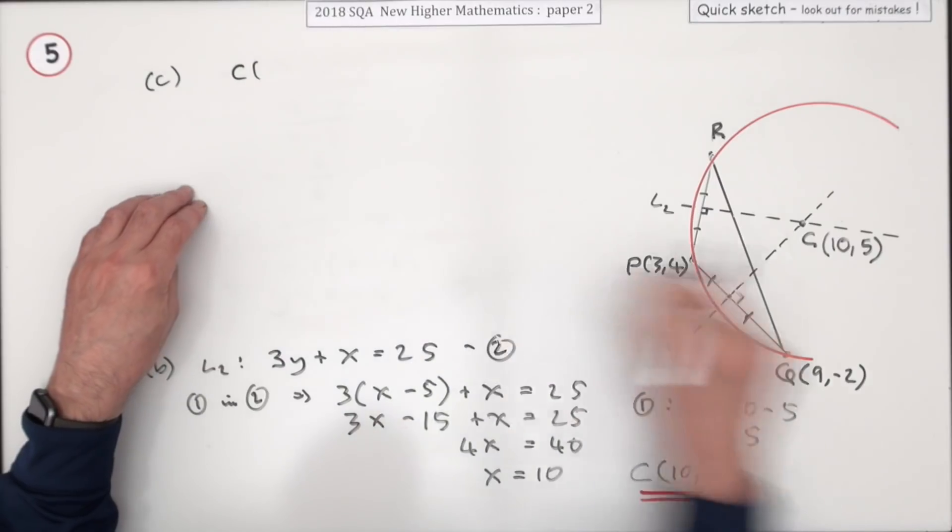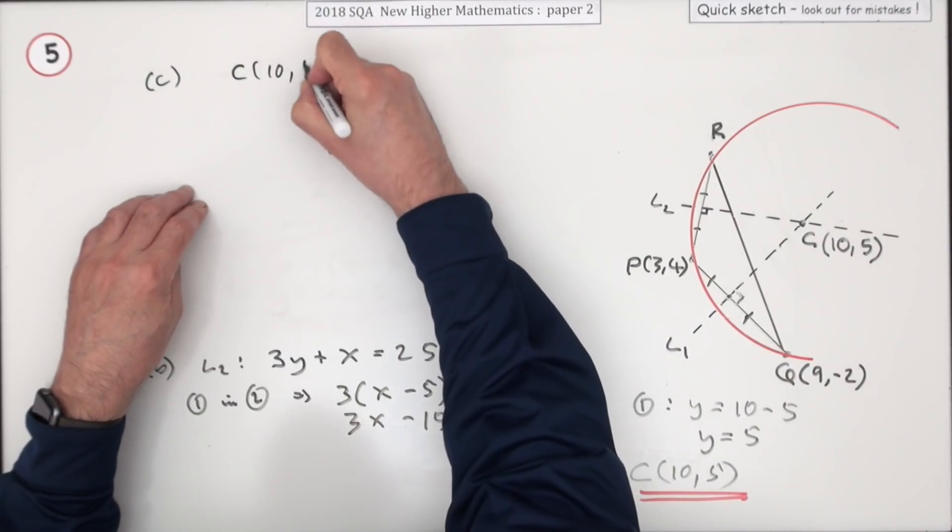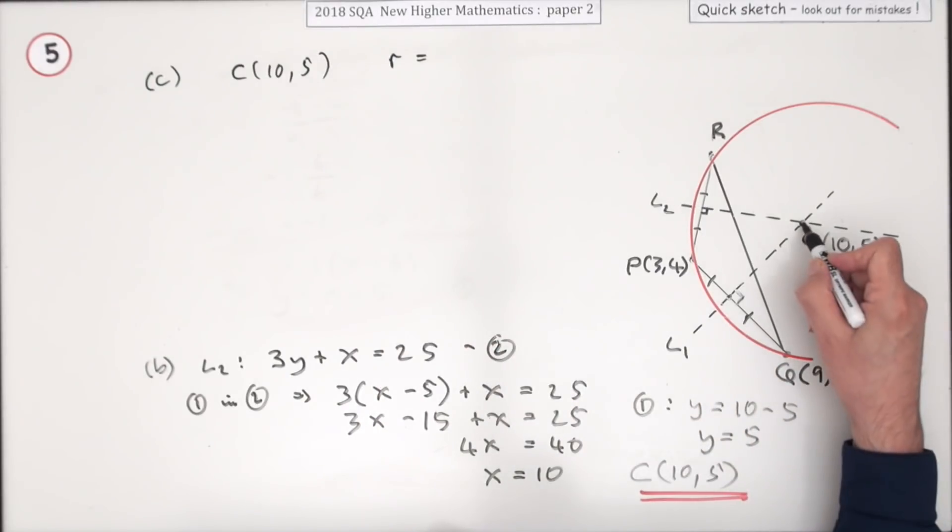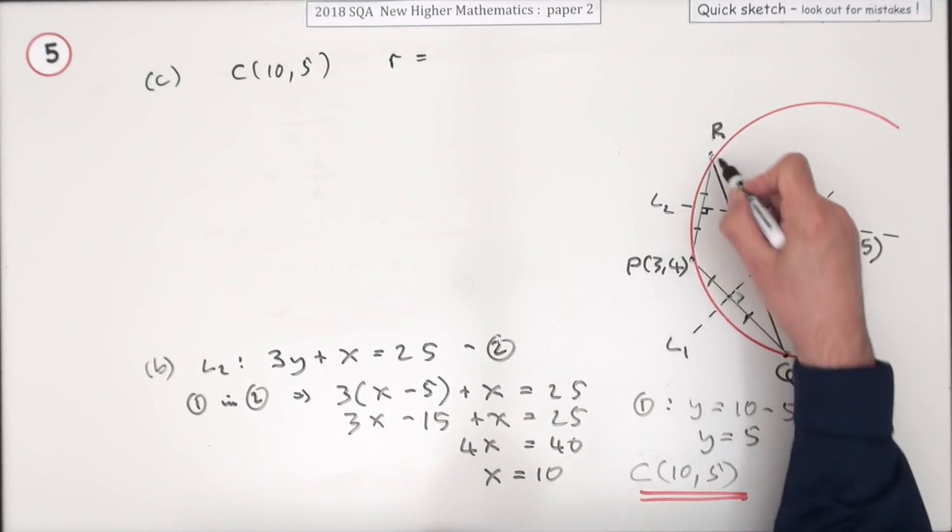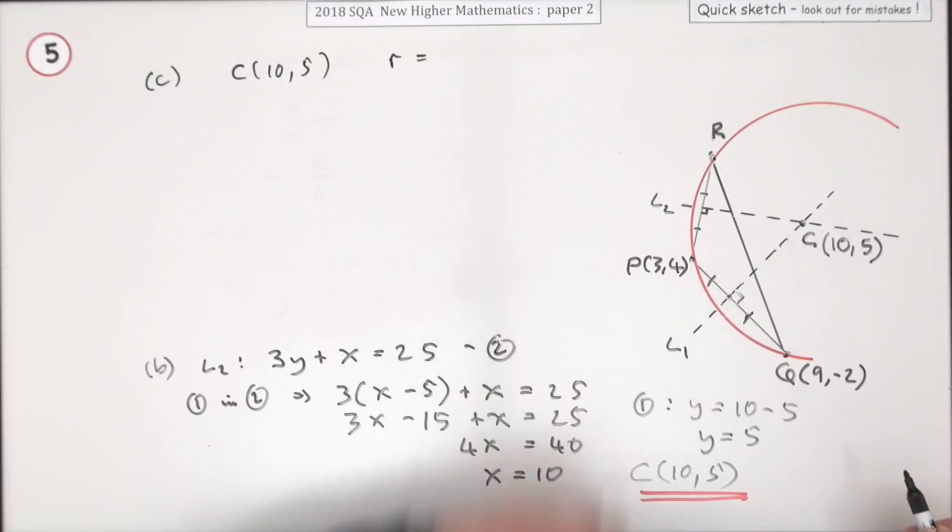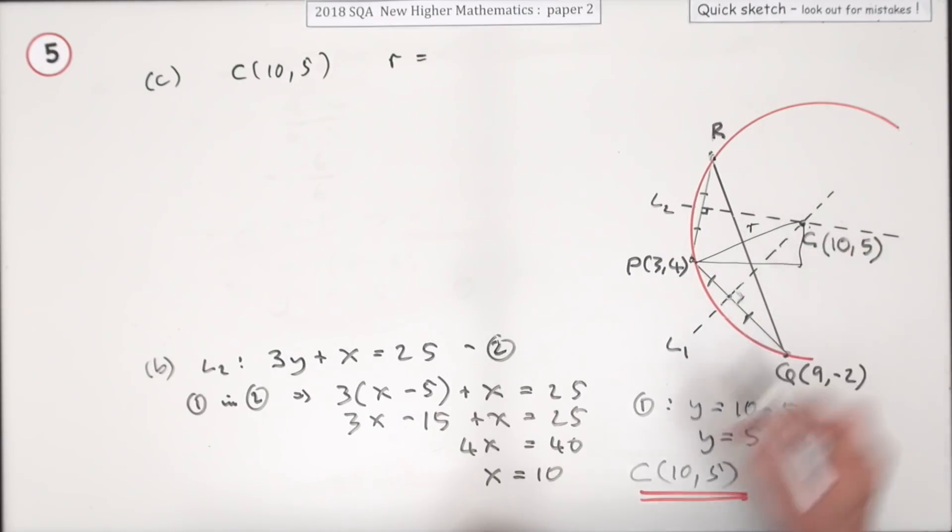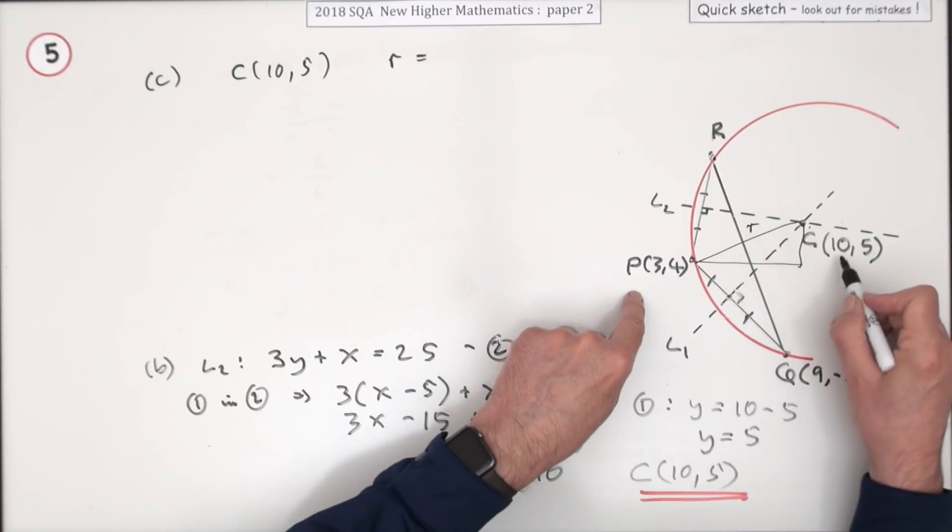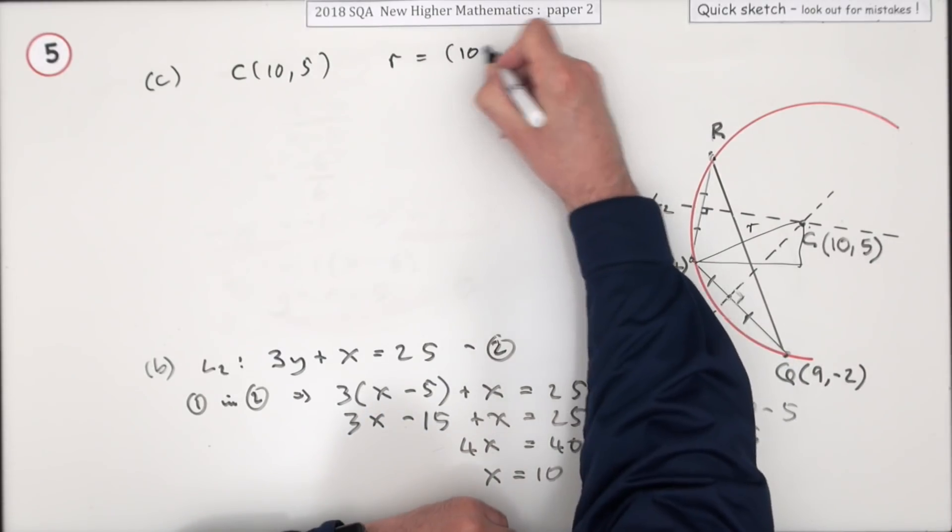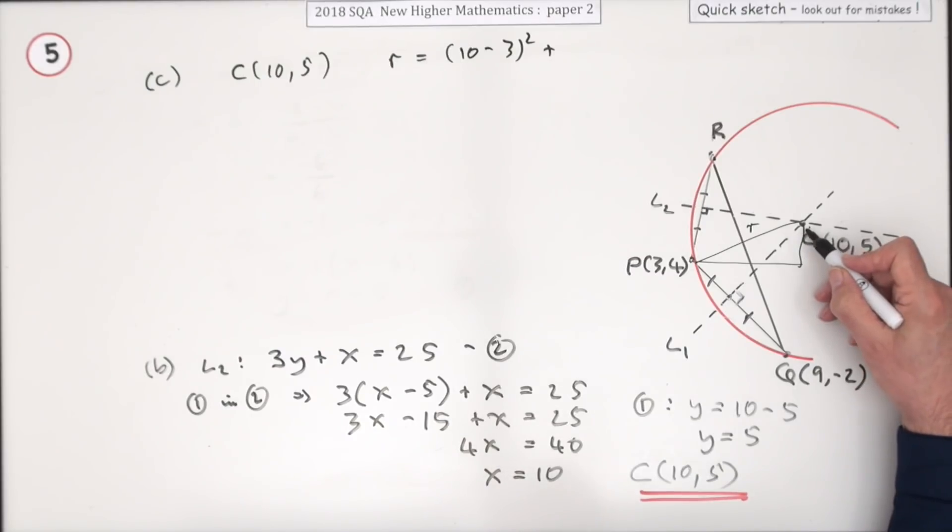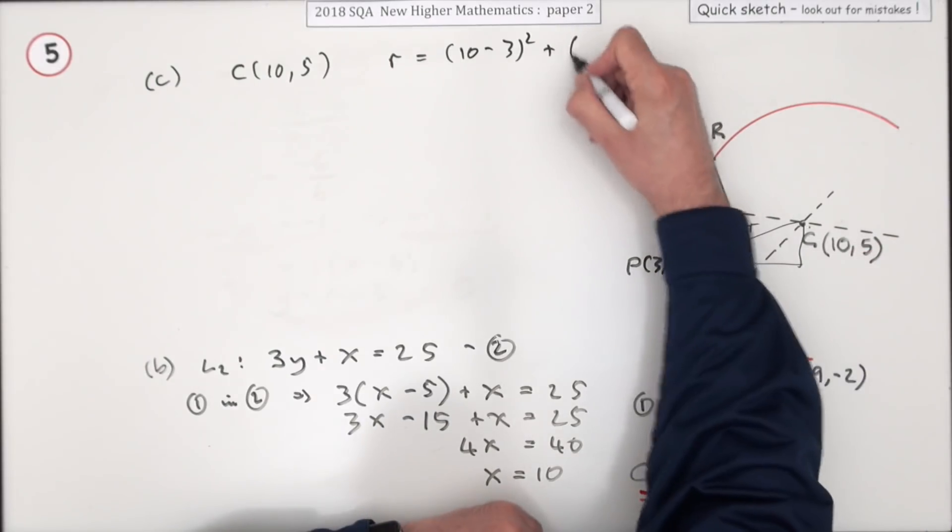Well for a circle you need two things: you need its center, and I've got that, 10,5, and you need its radius. And the radius will be the distance from the center to any point on the circumference. I'll just pick this one. So that's just Pythagoras, isn't it? How many from P to C? How many is it along, how many is it up, and there's the radius. Well how many along? Difference in the x's, that'll be 10 minus 3. How many up? Difference in the y's, that'll be 5 minus 4.